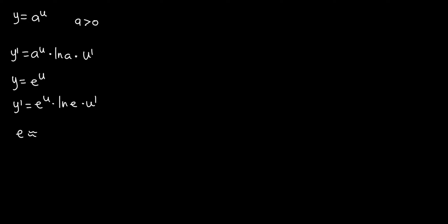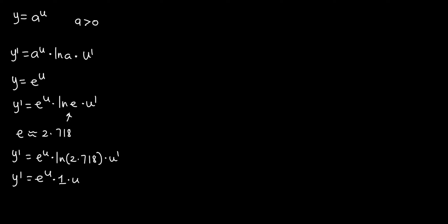is approximately 2.718. So we can substitute this value, and we get y' equal to e to the power u, multiplied by ln of 2.718, times u'. Now, ln of 2.718 gives us 1, so y' equals e to the power u, multiplied by 1, multiplied by u'. So whenever we have an exponential function where the base is Euler's number, the derivative takes this simplified form.